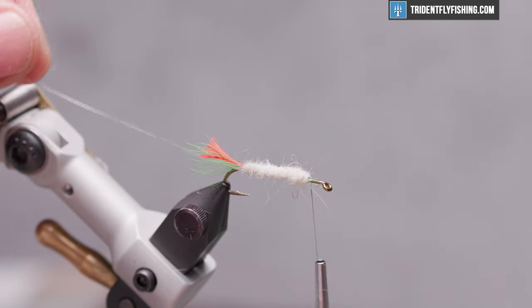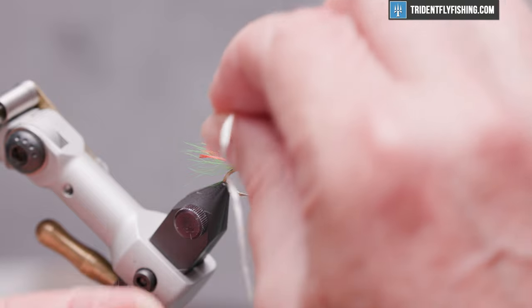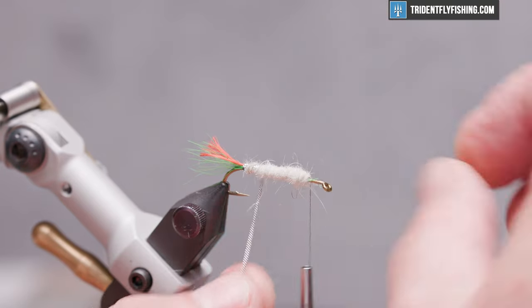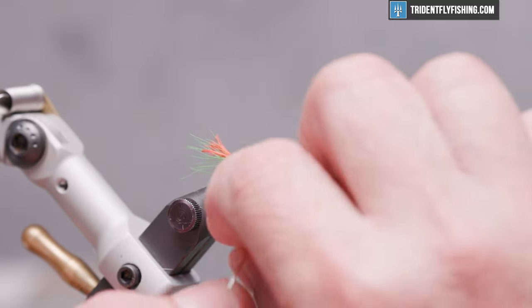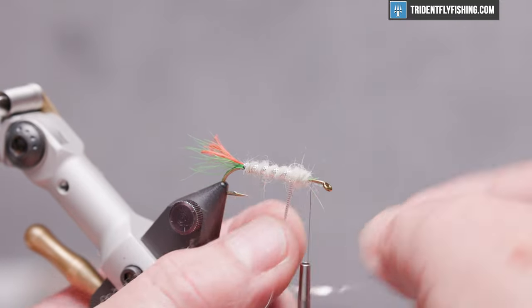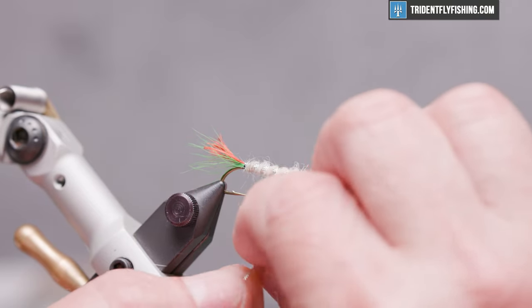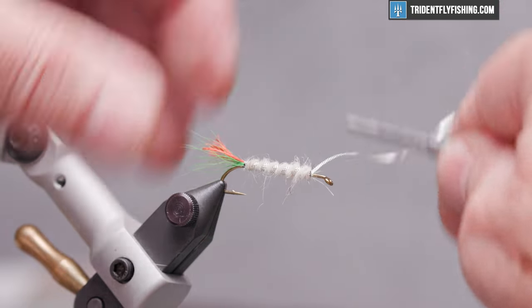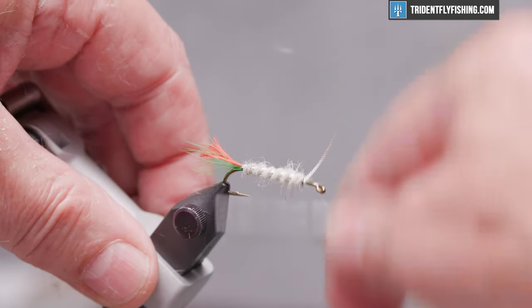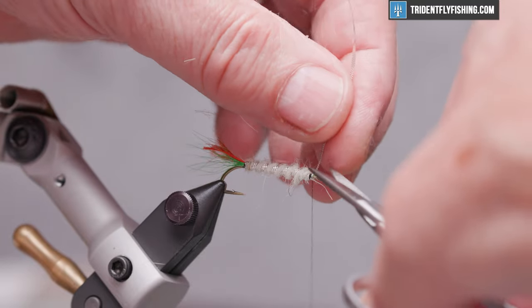Now we're going to wrap our rib forward. It's going to take probably about six turns. Nice, even, open spiral turns. And when we get up to our tie-in point, tie that off. And again, your special scissors for cutting heavy wire.